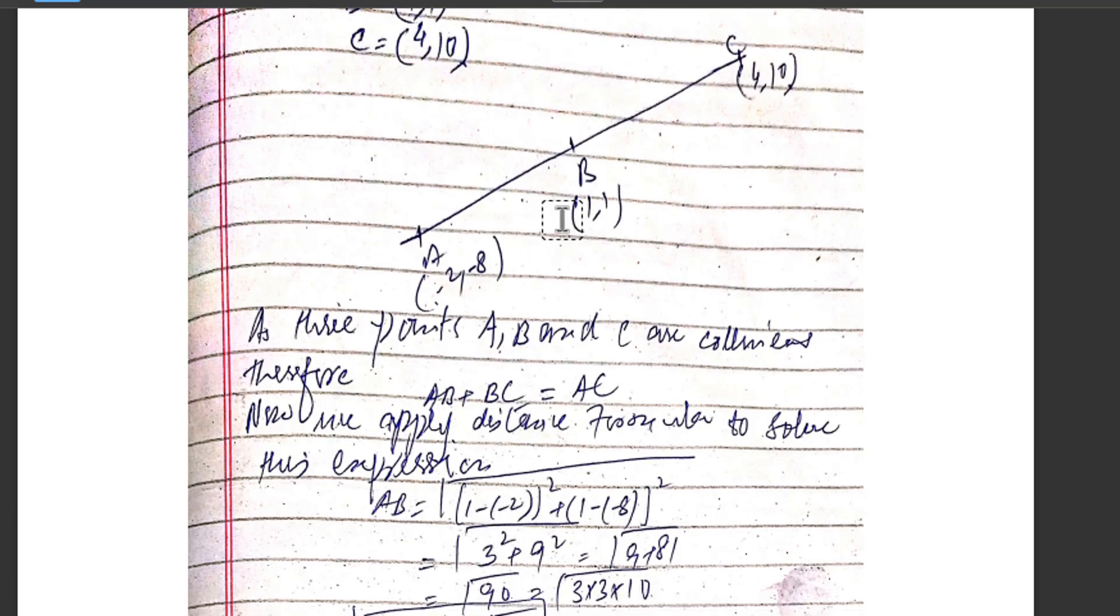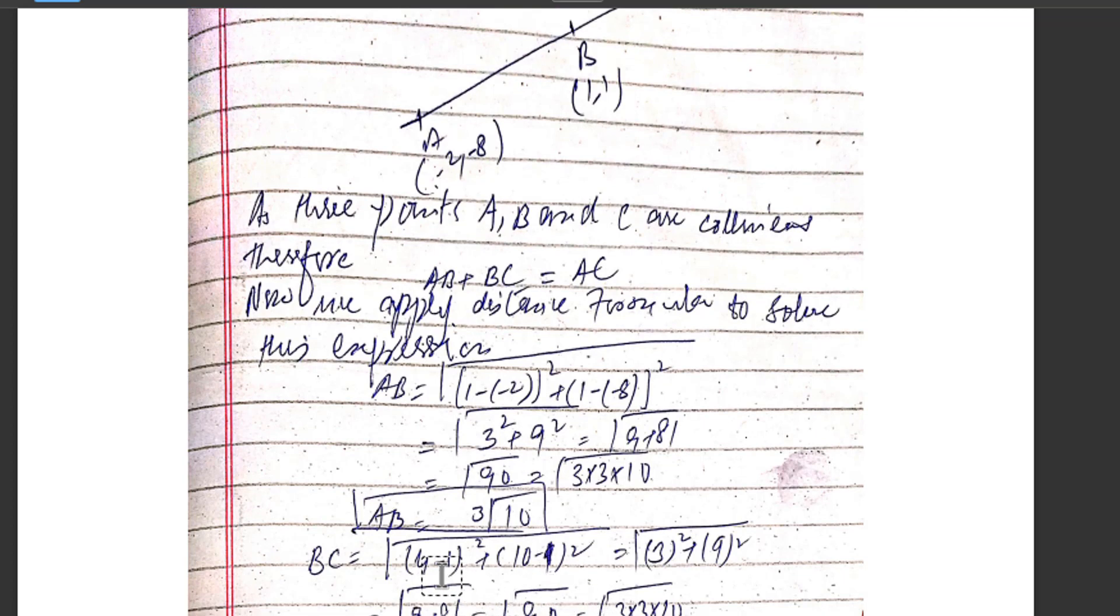AB equals square root of [(1 - (-2))² + (1 - (-8))²] = square root of [3² + 9²] = square root of [9 + 81] = square root of 90, which equals square root of (9 × 10) = 3√10.